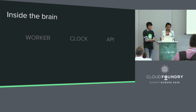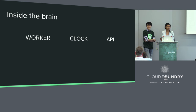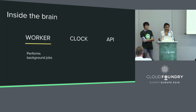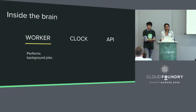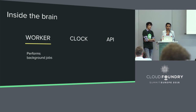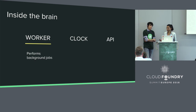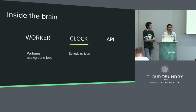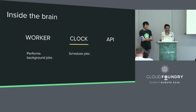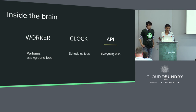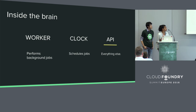Let's take a look at what's inside of this brain from the perspective of a BOSH deployment. There are three main jobs here: the worker, the clock, and the API. The worker performs all background jobs. We have two different types: the global worker and the local worker. The local worker really just takes local disk files and uploads them to the blob store. The global worker does pretty much all other jobs that happen with external resources.